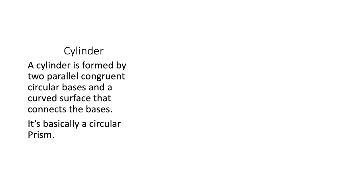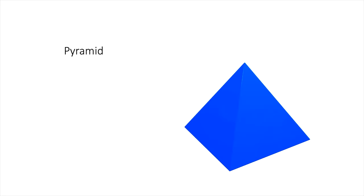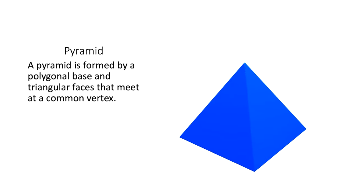So now let's talk about, in this case, our next shape, which is a pyramid. So a pyramid is formed by a polygonal base and triangular faces that meet at a common vertex. So in this case, this would be a rectangular pyramid because the base, in this case, is actually a rectangle, even though you can't fully see it from here. What you end up getting is all these sides though, are going to be triangles.